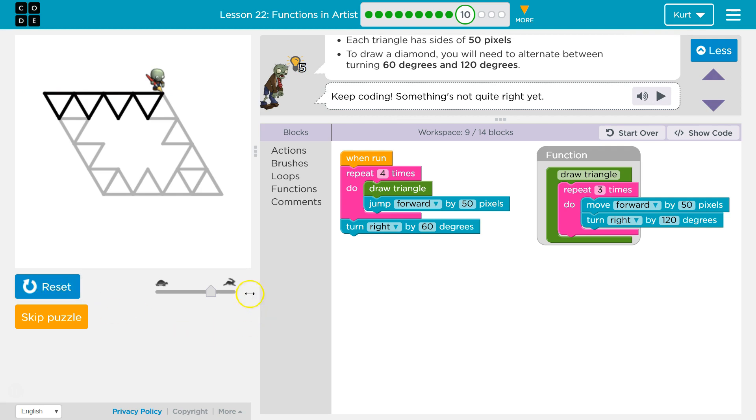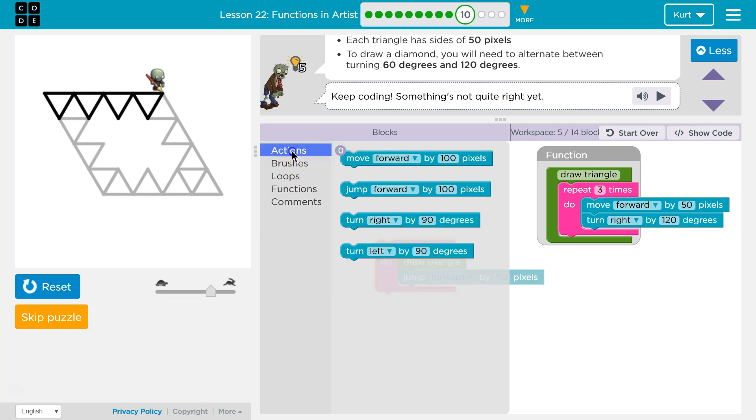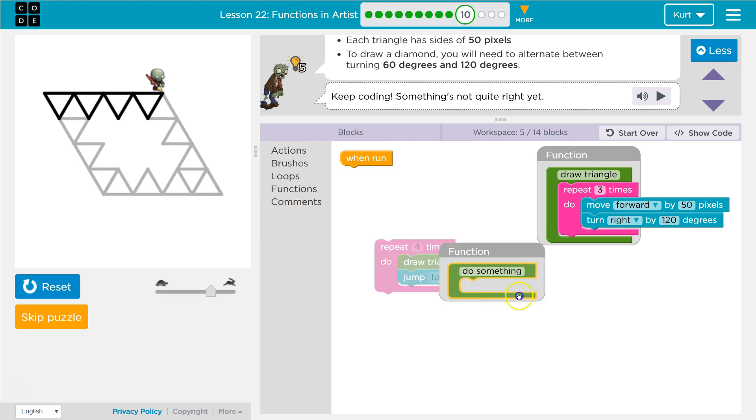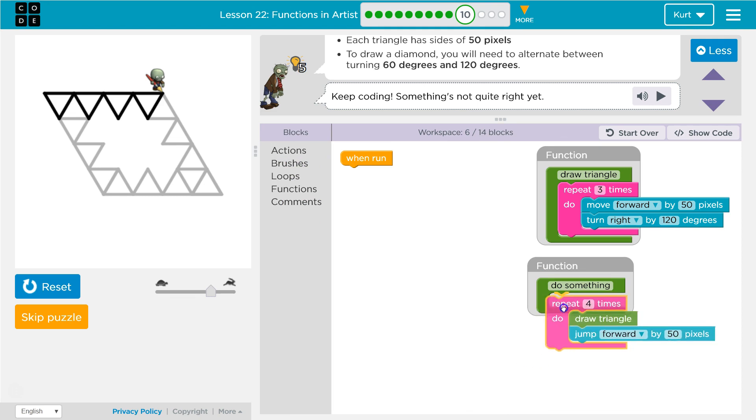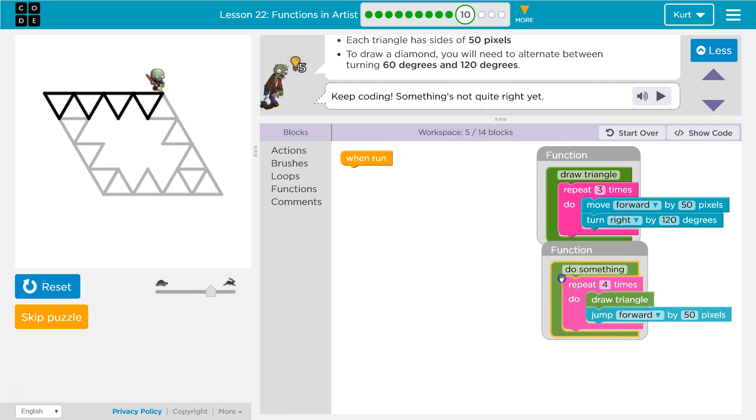And then... Well, then we're going to want to do this again once we turn. But then we're going to need to turn more than 60 here. So, it looks like this, since this turn is going to be different each time, we should make a function out of this. Because we're going to want to do that chunk of code more than once.